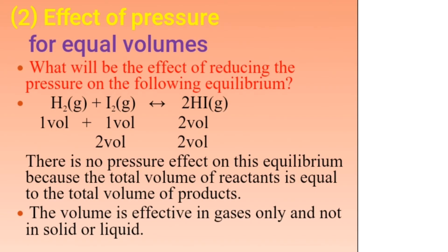Effect of pressure for equal-volume reactions: What is the effect of reducing pressure on the equilibrium H₂(g) + I₂(g) ⇌ 2HI(g)? Hydrogen is 1 volume, iodine is 1 volume, giving 2 volumes of reagents, and HI is 2 volumes of product. Since the total volume of reagents equals the total volume of products, there is no pressure effect on this equilibrium. Pressure changes affect gases only, not solids or liquids.